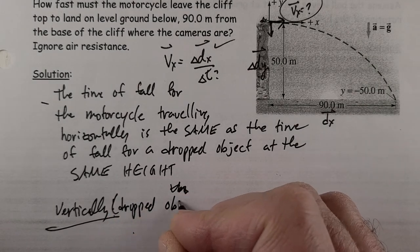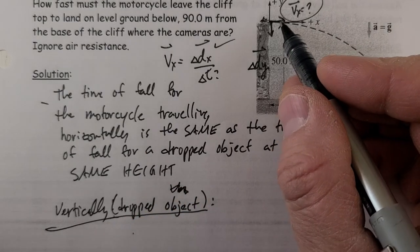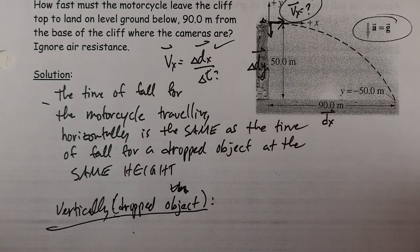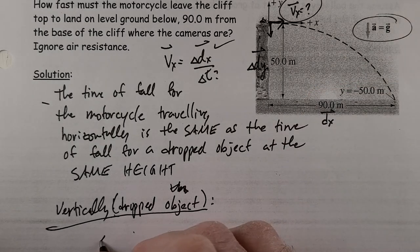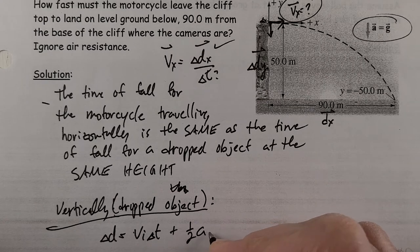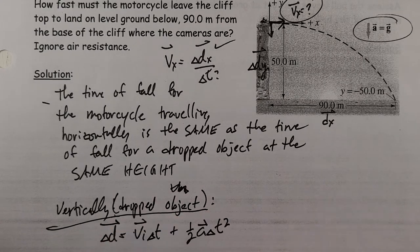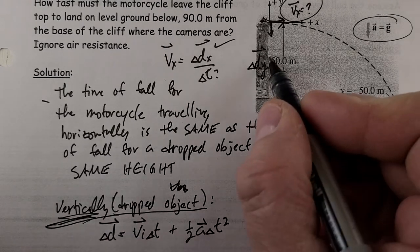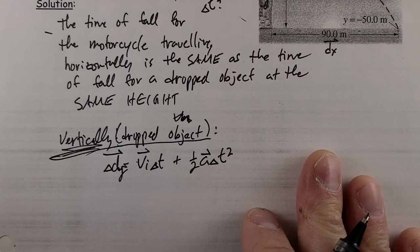The initial velocity vi is going to be zero. I'm looking for t. I have my acceleration which equals g. And I know the displacement. So I have this relationship: dy = vi·t + ½a·Δt². To be more clear about which d I'm talking about, I'm talking about the vertical d, so I could put dy there to indicate what I'm talking about.